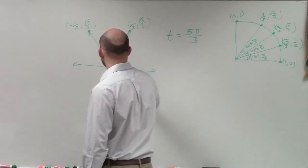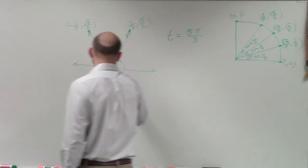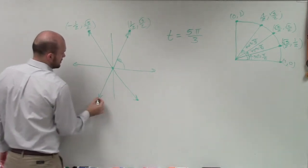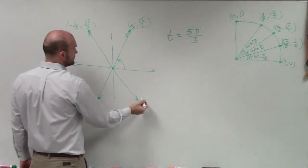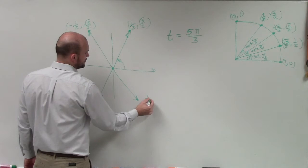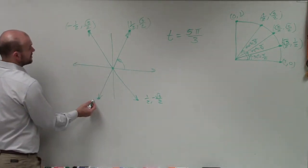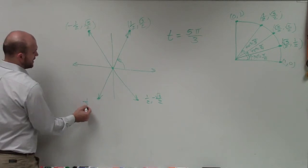Then I can reflect this over the x-axis and this over the x-axis. So then these two points now are that's still 1 half, but now that's negative square root of 3 over 2. And this point is going to be negative 1 half comma negative square root of 3 over 2.